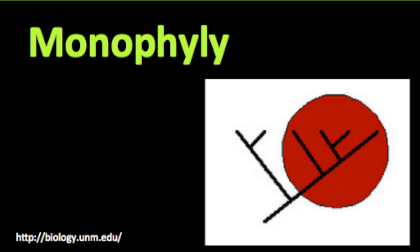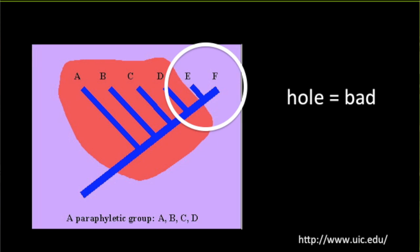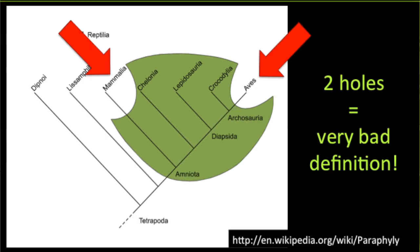We call this monophyly. Monophyly allows us to identify shared characteristics and define the group — we don't want a hole in our definition. You probably already know of a good example with a big hole in it — actually, two holes. The word reptile does not include birds or mammals, but we know that they belong on branches within this tree, so the word reptile doesn't include every member. It's a fine word, but we can't use it to define this group.